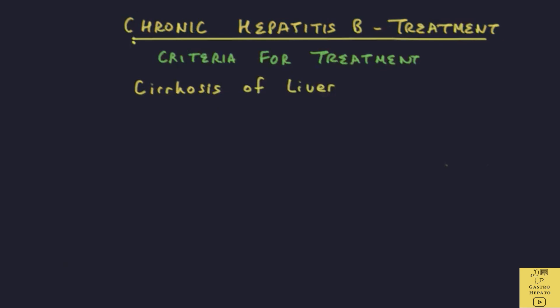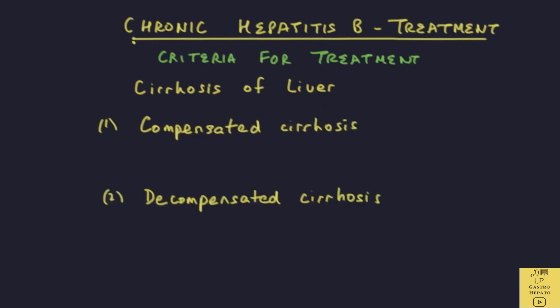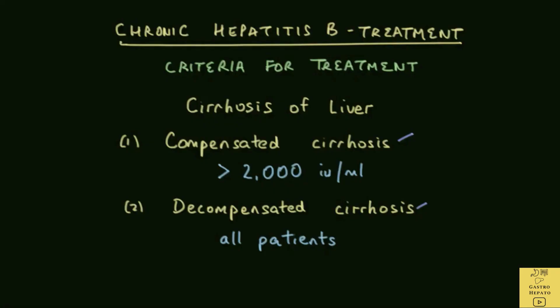There is another group of patients considered for treatment: those with severe scarring or cirrhosis of the liver. There are two types of cirrhosis — compensated cirrhosis, where the liver although scarred is still able to perform most of its basic functions, and decompensated cirrhosis, where the liver is unable to carry out its functions and goes into liver failure. In compensated cirrhosis, the doctor will start medication if DNA levels are more than 2,000 IU per ml, whatever the ALT levels are. In decompensated cirrhosis, all patients are treated with medication.